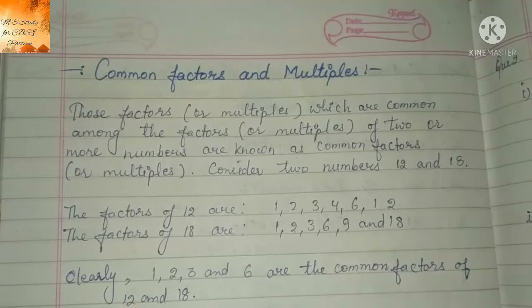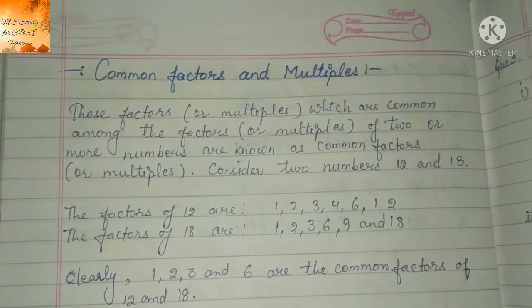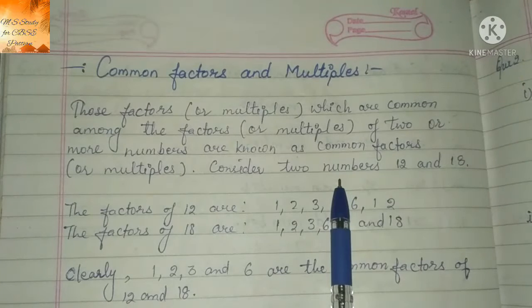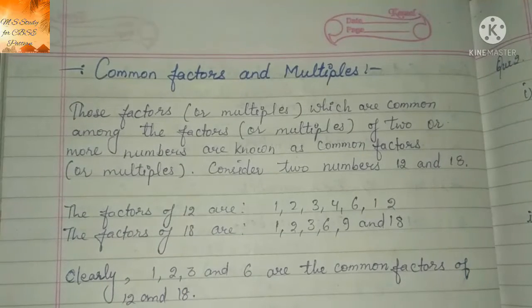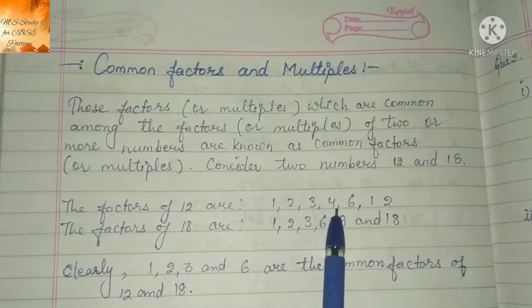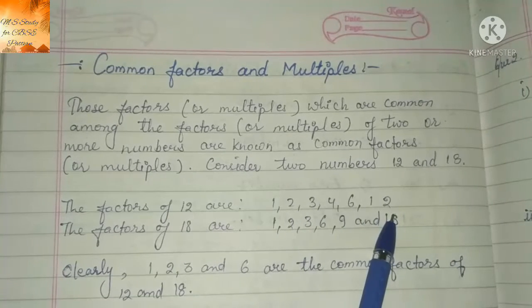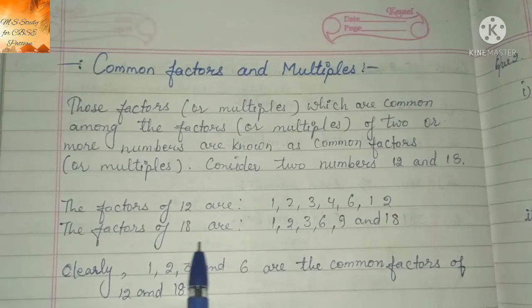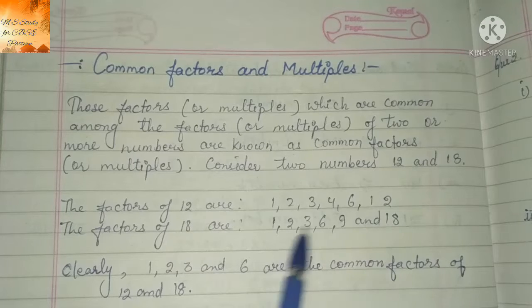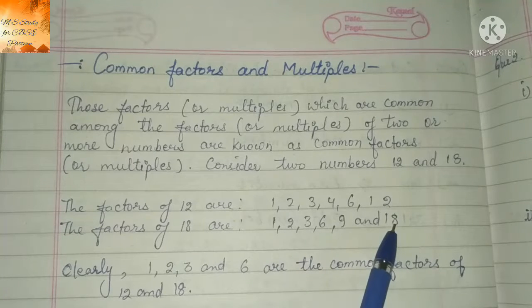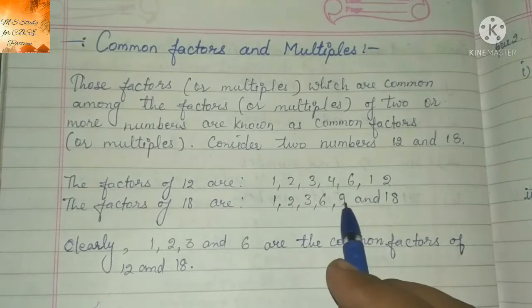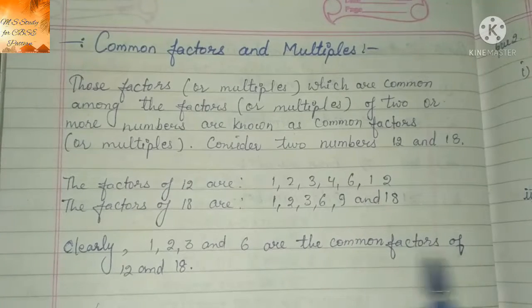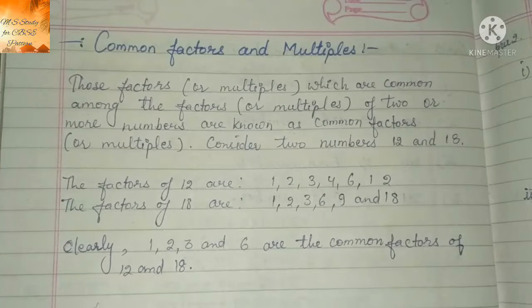Consider 2 numbers 12 and 18. The factors of 12 are 1, 2, 3, 4, 6 and 12. The factors of 18 are 1, 2, 3, 6, 9 and 18. So clearly 1, 2, 3 and 6 are the common factors of 12 and 18, because these are the factors that are common in both.